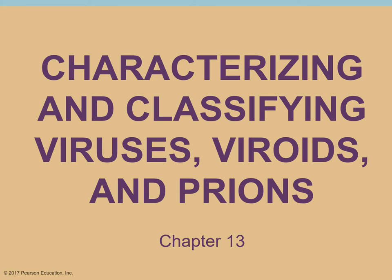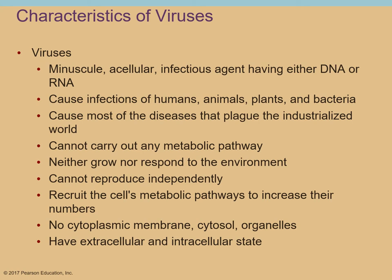This is Chapter 13, dealing with the characterization and classification of viruses, viroids, and prions. Viruses are extremely small — the smallest of any microscopic organisms we've dealt with yet. They are acellular and infectious. They have either DNA or RNA, but never both. They can cause disease infections in humans, plants, other animals, and even in bacteria.